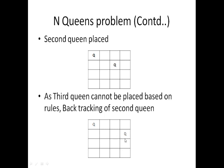We place the 2nd queen in the 4th position, because rows, columns, and diagonals block the other positions. The only possible locations are the 3rd and 4th positions. While placing the 2nd queen in the 3rd position, we were unable to place the 3rd queen. So we go 1 step backward and shift the 2nd queen from the 3rd position to the 4th position.